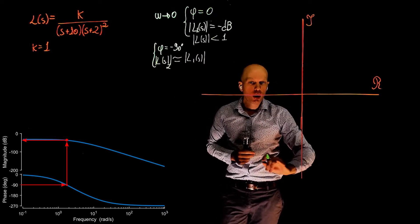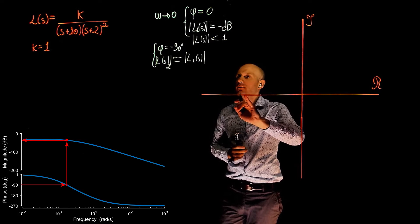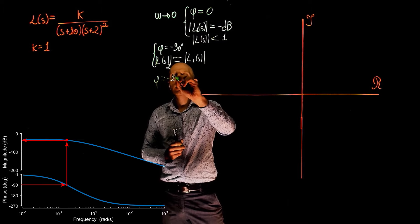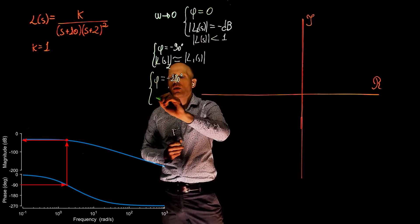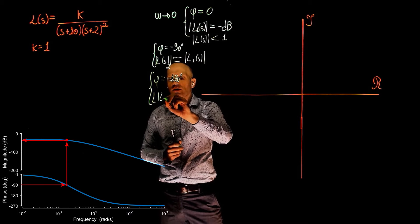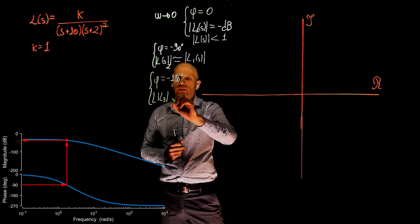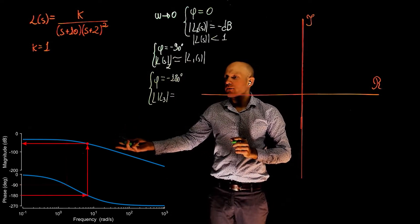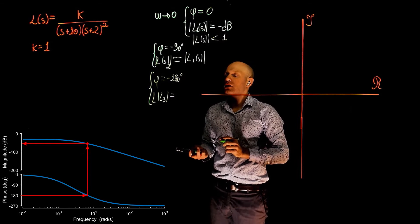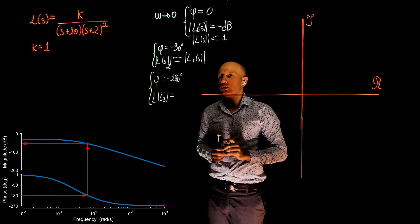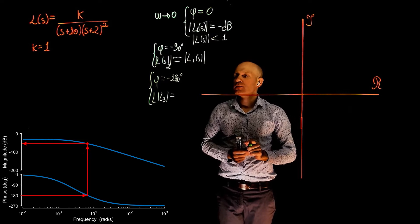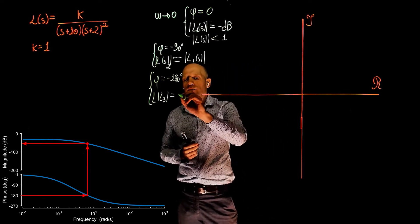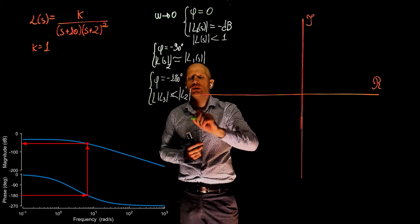Now let's go on to negative 180 degrees. When the phase is negative 180 degrees, what is the magnitude? Let's call it L3. We trace a line from negative 180 to the intersection with the phase plot, go up and look at the magnitude. The magnitude now starts to decrease, and we don't know exactly the value, but it will be smaller than L2.